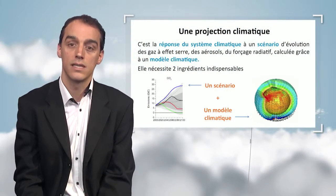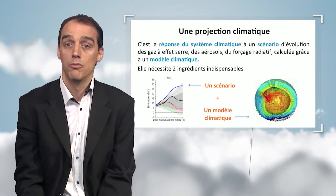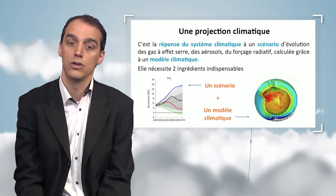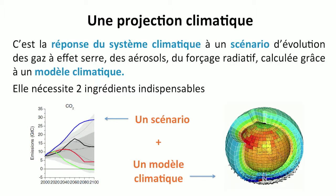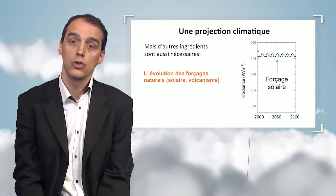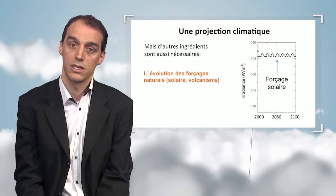On the first slide, you can see all of the ingredients needed for a climatic projection. A climatic projection is an answer provided to a scenario on evolution of greenhouse effect gases, aerosols, and radiative forcing, thanks to a climatic model. The two main ingredients absolutely necessary are scenarios for evolution of greenhouse effect gases on the left-hand side and a climatic model on the right-hand side. However, these two ingredients alone are not sufficient to perform a climatic projection.